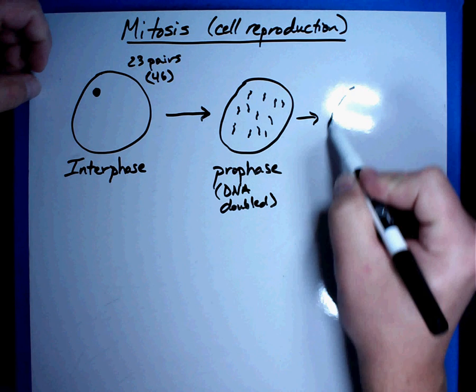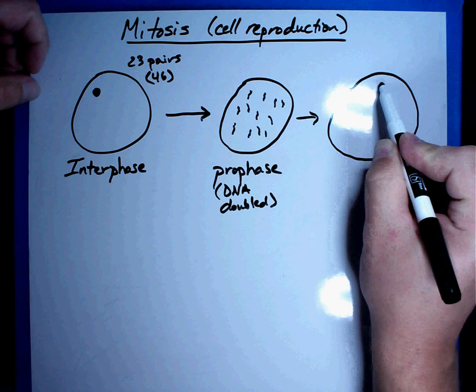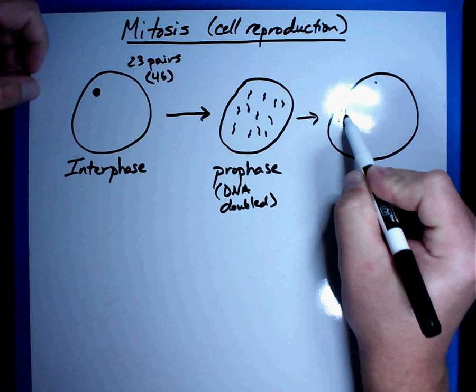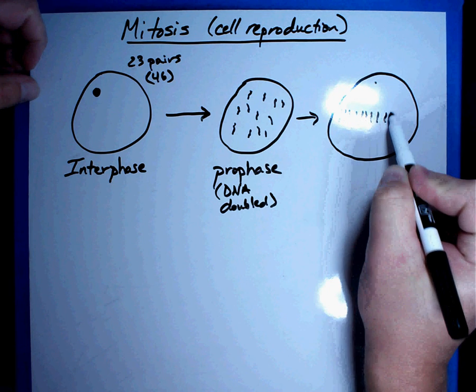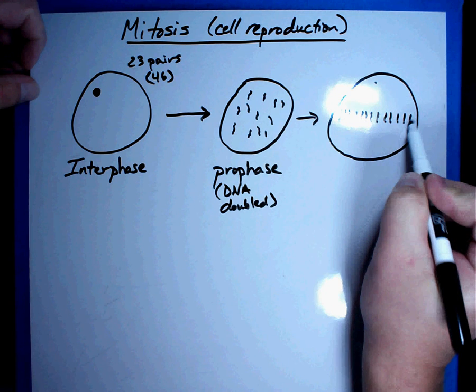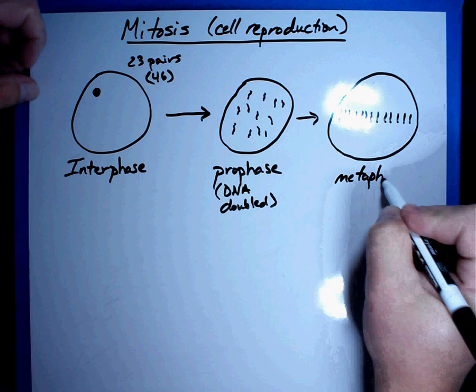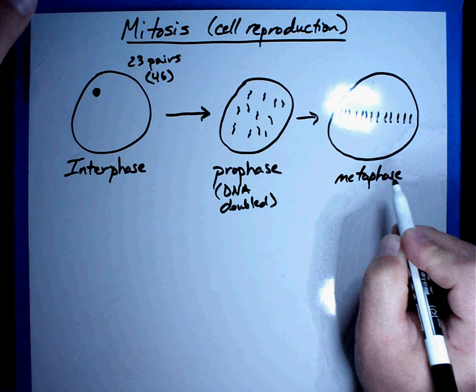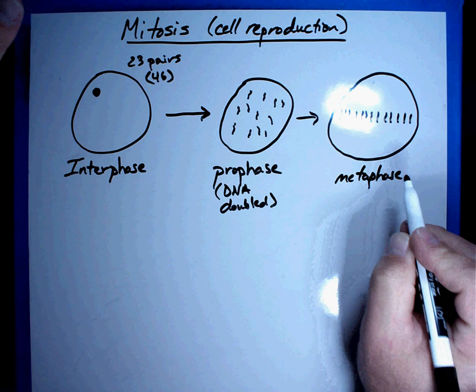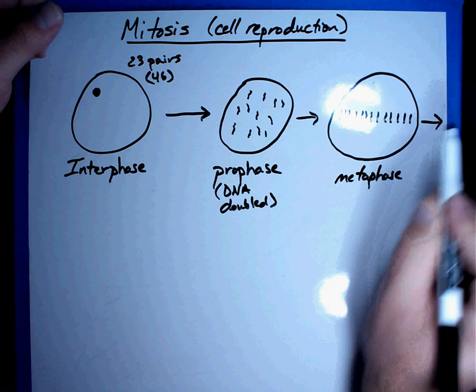After it's all doubled, what happens next is what is called metaphase. And in metaphase, what happens is the DNA starts to line up in the middle of the cell. Now this is an easy one to remember because meta reminds me of the word middle. They line up in the middle. And so I have all of this DNA lined up in the middle of the cell. So metaphase happens next.